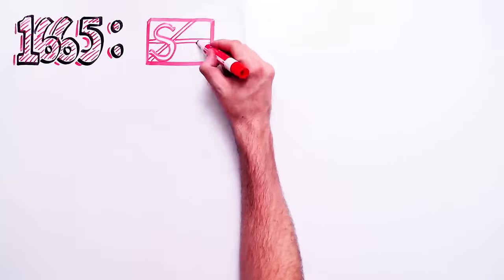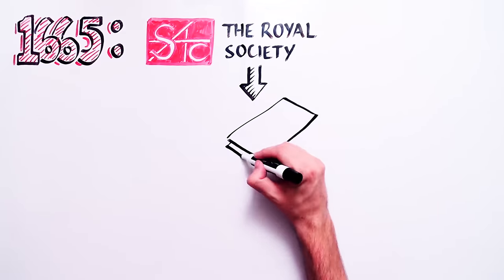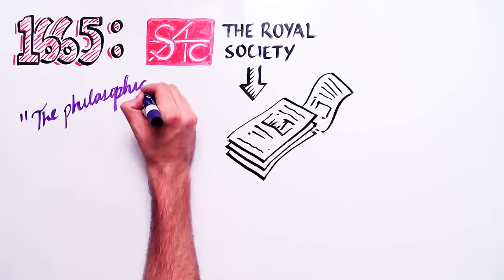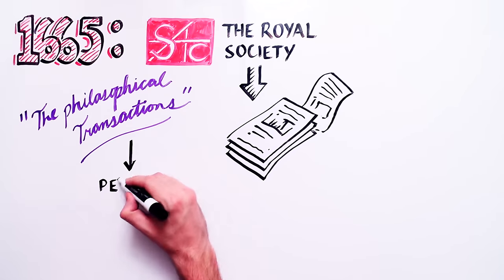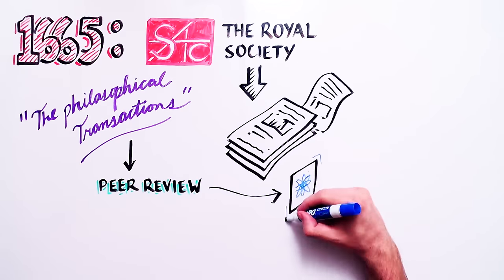In 1665, the Royal Society of London created the first scientific journal called Philosophical Transactions to facilitate the transmission of new scientific findings.